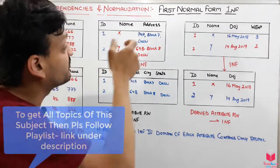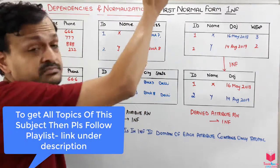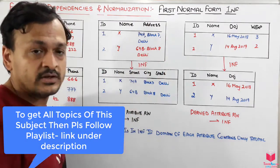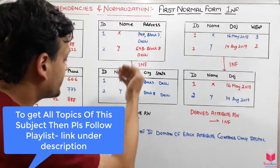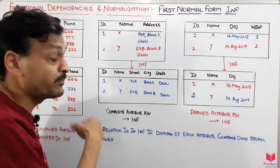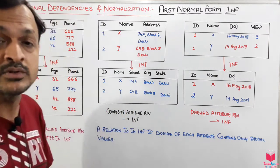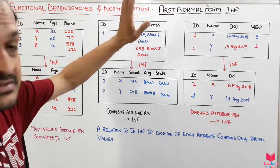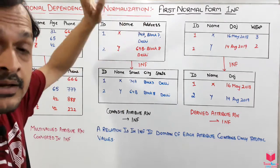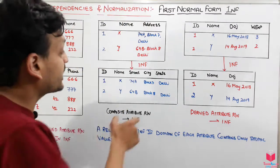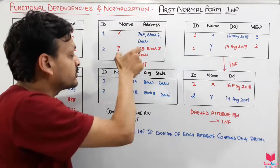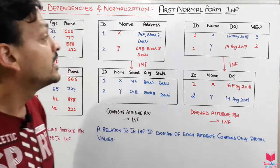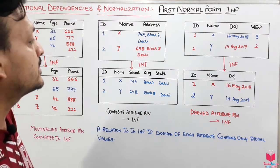We will remove the address column completely and replace it with its component attributes. For example, street='74A Block 7', city, and country='India'. This is how we convert a composite attribute into First Normal Form — remove the composite column and add its individual components as separate columns.